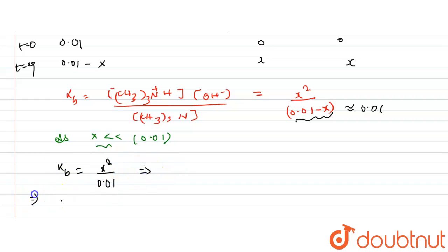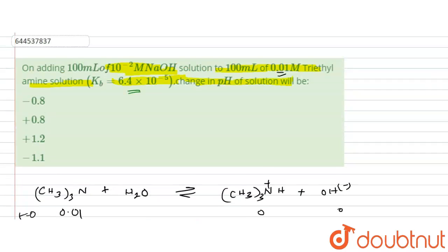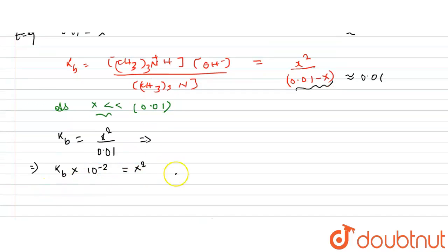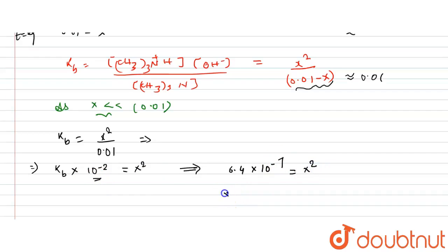Rearranging: x² = Kb × 0.01 = Kb × 10⁻². Substituting Kb = 6.4 × 10⁻⁵, we get x² = 6.4 × 10⁻⁵ × 10⁻² = 6.4 × 10⁻⁷, which can be written as 64 × 10⁻⁸.